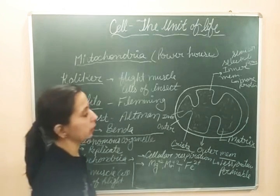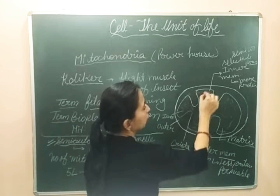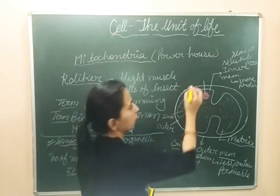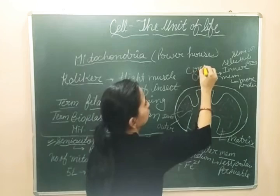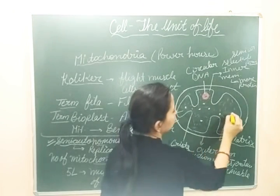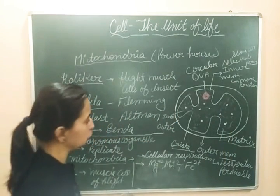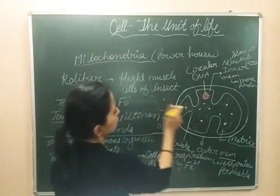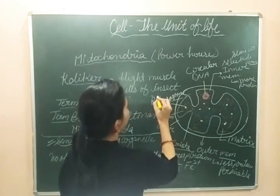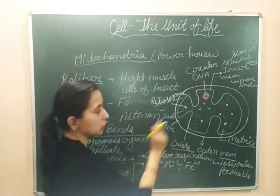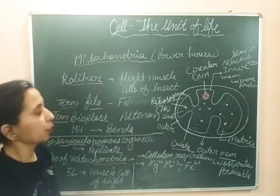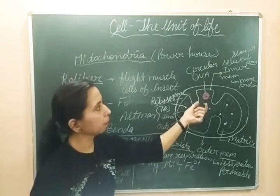Besides enzymes and ions, the matrix also contains circular DNA and ribosomes. The circular DNA is present inside the matrix along with ribosomes. The ribosomes present in mitochondria are of the 70S type. However, in mammalian mitochondria specifically, the ribosomes are of the 55S type with two subunits — 38S and 28S.